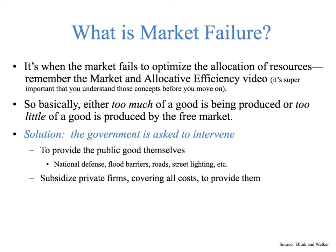So what are they going to do? Well, they're going to either decide to provide public goods themselves — national defense, flood barriers, roads, street lighting, etc. — or they're going to subsidize private firms to cover the costs to provide them. The government gets involved to try to either solve the market failure, which they usually don't totally do, but at least eliminate some of the misallocation of resources.